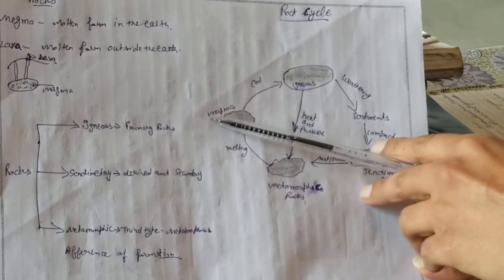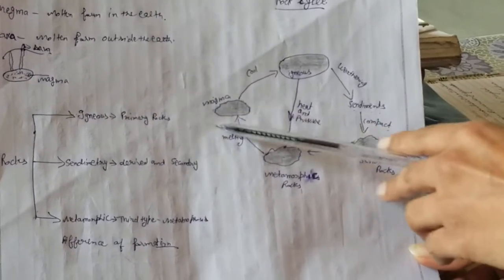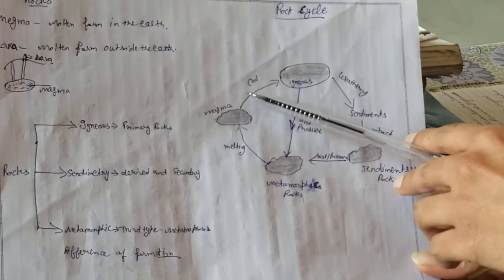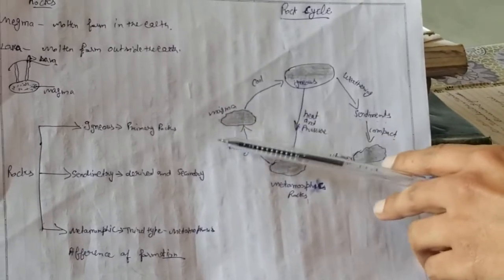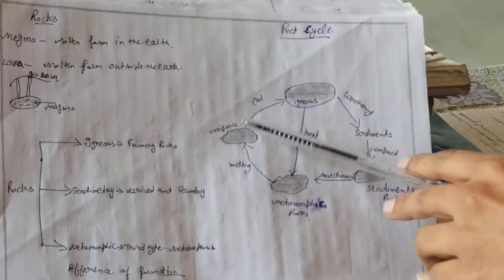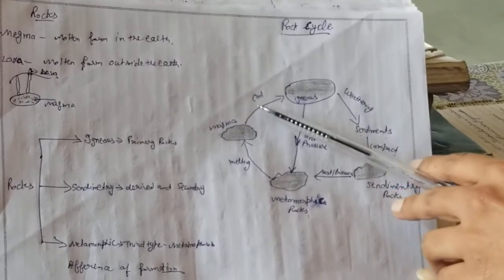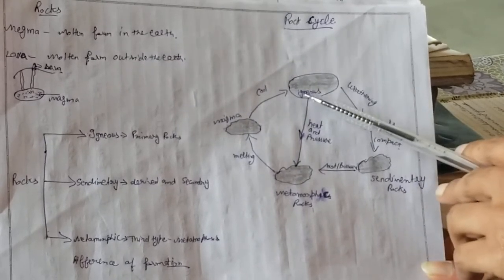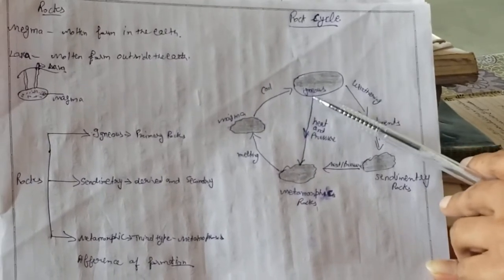Let's look at the rock cycle. Firstly, this is magma. Magma is inside the earth or outside the earth. When magma cools, rocks form.